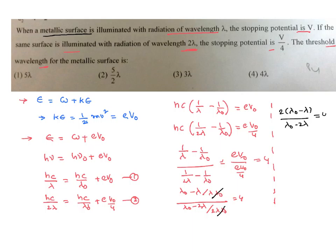Therefore, by cross multiplying we can get 4 lambda₀ minus 8 lambda equal to 2 lambda₀ minus 2 lambda. Therefore, it will be like 4 lambda₀ minus 2 lambda₀ plus 8 lambda. So it is going to be 2 lambda₀ equal to 6 lambda. That implies lambda₀ equal to 3 lambda.